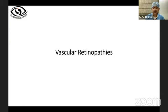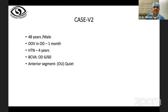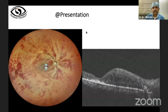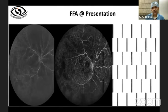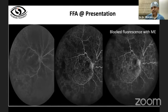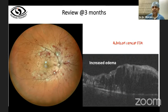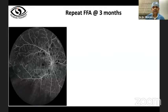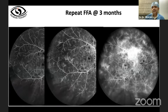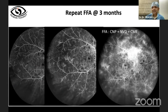Case 1: A 48-year-old male with central retinal vein occlusion and significant macular involvement. Initial angiogram showed blocked fluorescence with macular edema; patient received anti-VEGF. Three months later, increased edema and deteriorating vision despite cleared hemorrhages. Repeat angiogram revealed NVD with severe capillary non-perfusion and macular edema — changing our treatment to include laser as well.